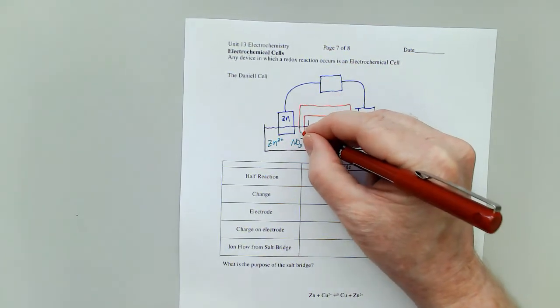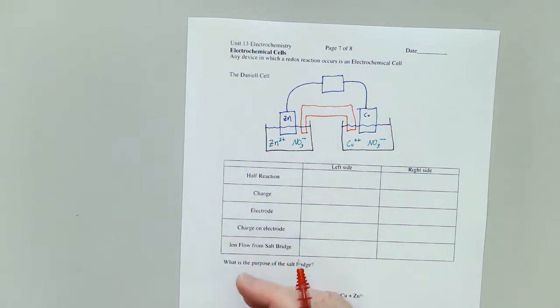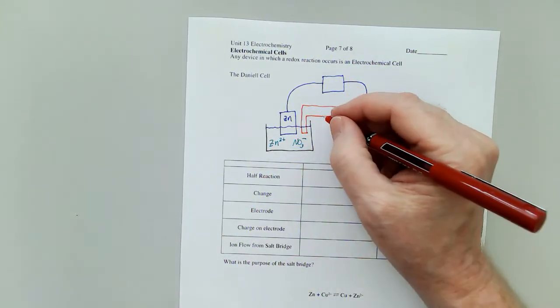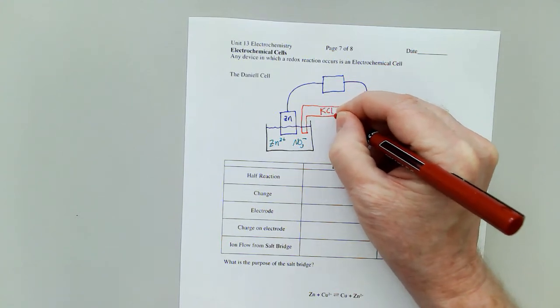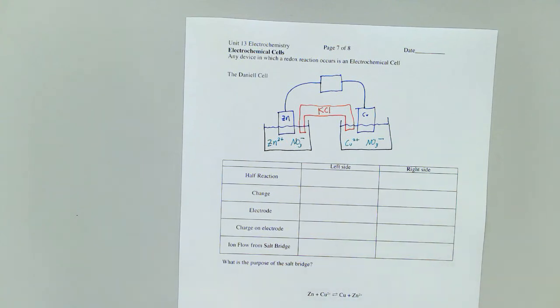It allows for a back flow of charge to keep the charge balanced on both sides. Now in here we'll put a salt like KCl, something that's really really soluble that'll make things easier for us.